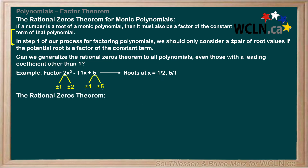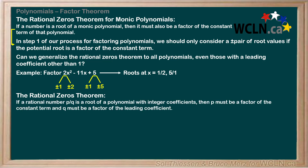In general, the rational zeros theorem is as follows. If a rational number, p over q, is a root of a polynomial with integer coefficients, then p must be a factor of the constant term, and q must be a factor of the leading coefficient. You can see how the rational zeros theorem for monic polynomials was just a special case of this, where q had to be plus or minus 1 since the leading coefficient was 1.